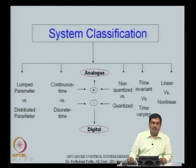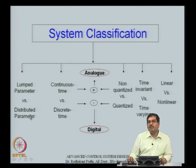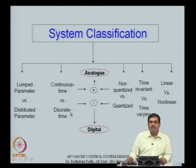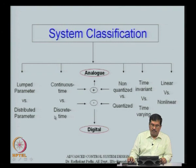Distributed parameter systems cannot be described as lumped parameter systems. For example, temperature control, flow control, or vibration control — there is dynamics between different molecules of the system, requiring partial differential equations. The key difference is that lumped parameter systems have only time as the independent variable, while distributed parameter systems have both time and a spatial variable, also requiring boundary conditions in addition to initial conditions.